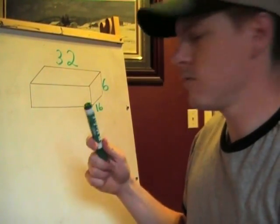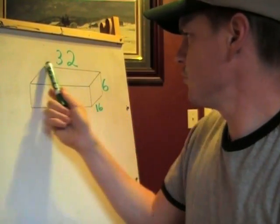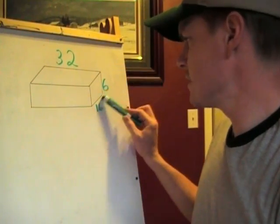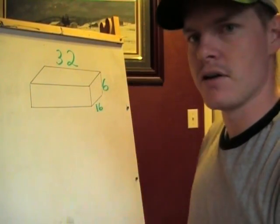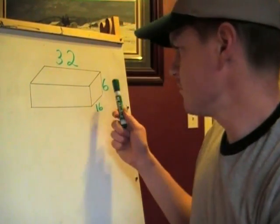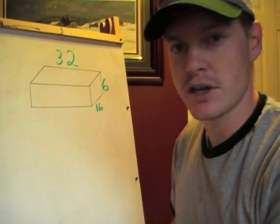So, what I have here is a drawing of about what my chicken yard looks like. It's 32 feet across, and then it's 6 feet tall, and 16 feet here in length. So, what I needed to do was to buy enough chicken wire that I could wrap it around all sides of this chicken fence.